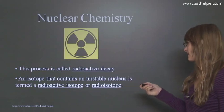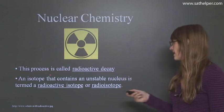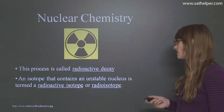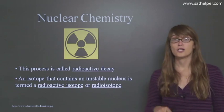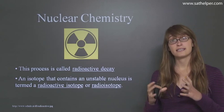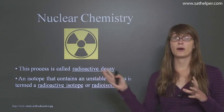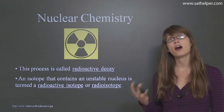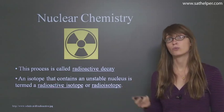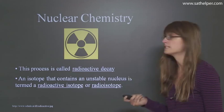So this process is called radioactive decay. An isotope that contains an unstable nucleus is termed a radioactive isotope or radioisotope. Basically when you have a nucleus that is capable of giving away a particle or some energy, it is called a radioactive isotope. Not all atoms are capable of doing this, and we'll see later on which atoms are and which atoms aren't.